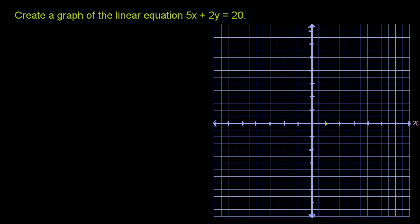Create a graph of the linear equation 5x plus 2y is equal to 20. So the line is essentially the set of all coordinates, all x's and y's, that satisfy this relationship right over here.